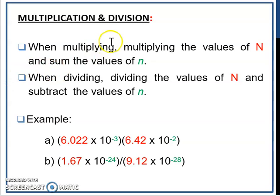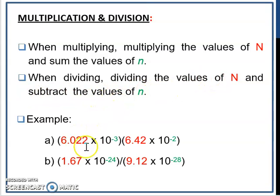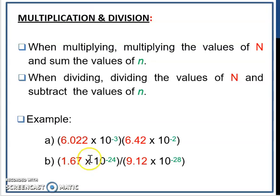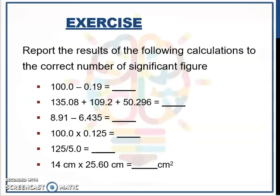Next is multiplication and division. When multiplying, multiply the values of N (the coefficient, shown in red) and sum the values of the exponents (shown in green). When dividing, divide the values of N and subtract the exponents. The red color — you multiply for multiplication and add the green for exponents. For division, divide the red color and subtract the green color. Here are some exercises for you to try.